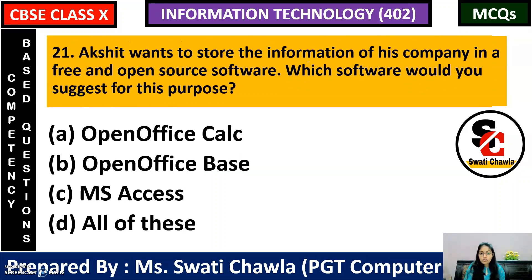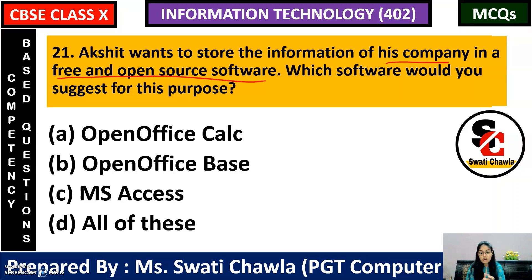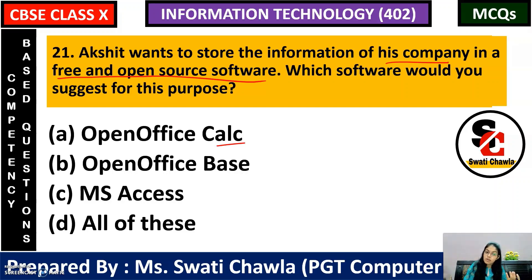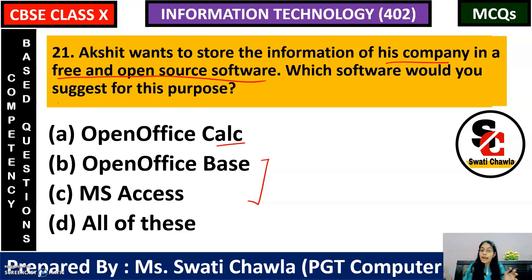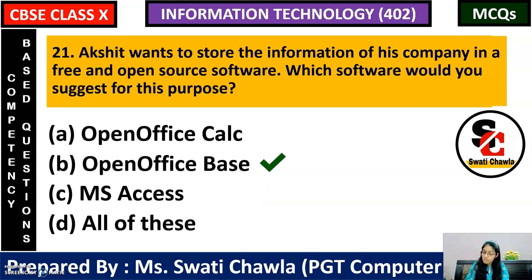Next: Akshat wants to store information of his company in a free and open source software. You can generate reports and create forms in both OpenOffice Base and MS Access. But the question asks for free and open source — MS Access is a Microsoft product and is not free. OpenOffice Base is open source software. So the correct answer is option B — OpenOffice Base.